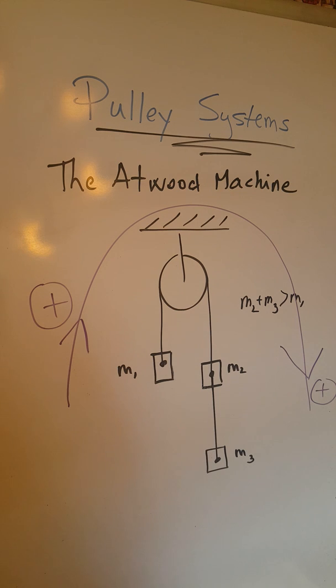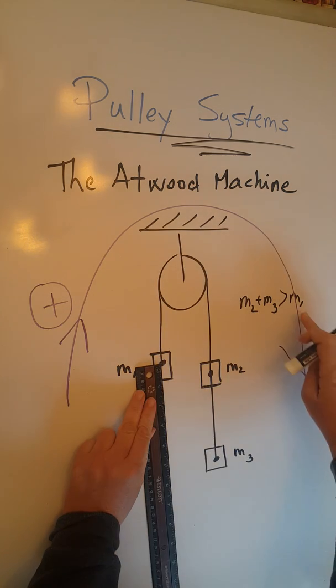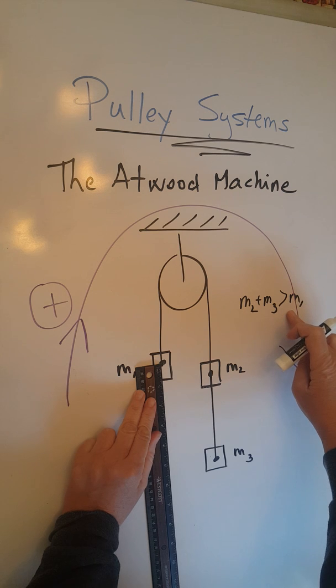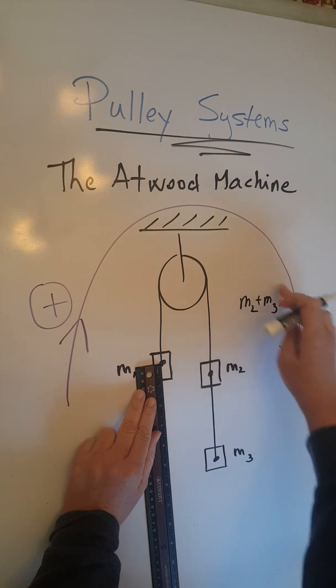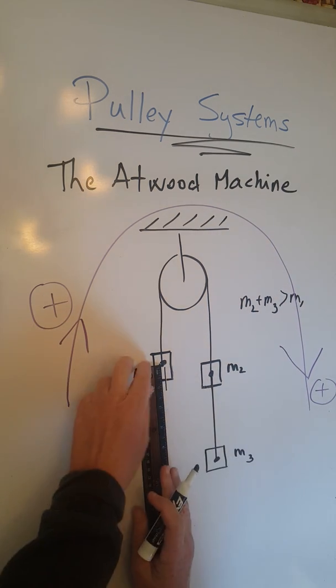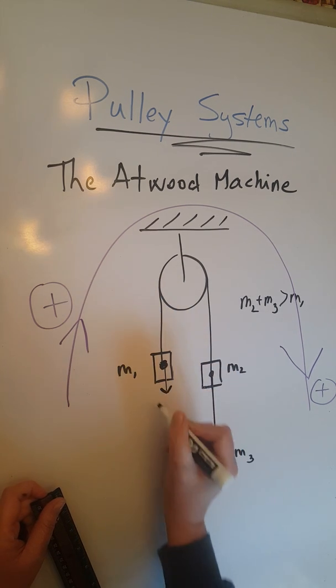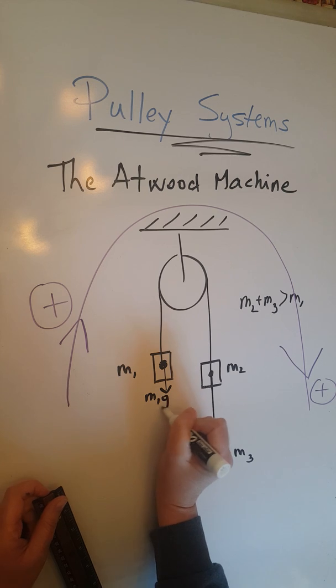So let's go ahead and do the free body diagram for this Atwood machine, and we are going to start with m1. Forces acting on m1 will be m1g. It's going to be quite small, quite short in magnitude, because m1 is the smallest mass when compared to m2 plus m3. So I'm just going to draw a little bit of a force over here in black, from the center of gravity. Label that m1g.